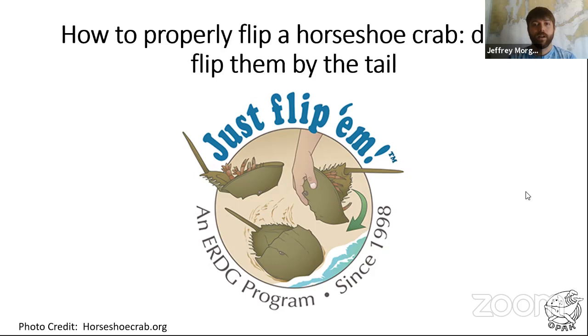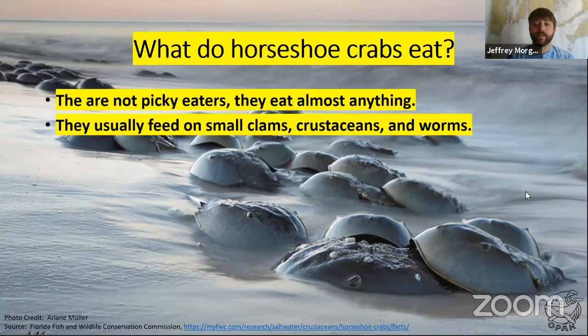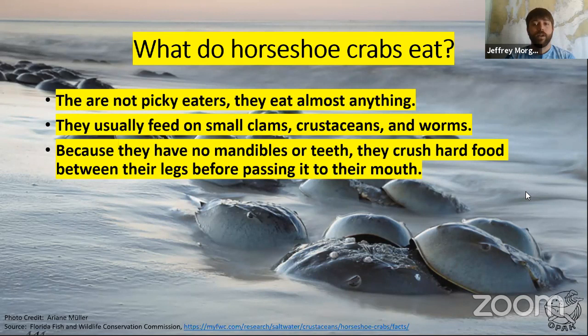What do these horseshoe crabs eat? Horseshoe crabs are not picky eaters at all. Because they live on the ocean floor, they eat the things that live there: small clams, razor clams, little baby quahogs, crustaceans or shrimp, and little worms like polychaetes that live on the bottom of the ocean floor. Horseshoe crabs do not have teeth, so they need to crush their food. They take their little legs and push all the food towards their mouth, and to break up all those hard parts, horseshoe crabs actually have gizzards just like chickens.